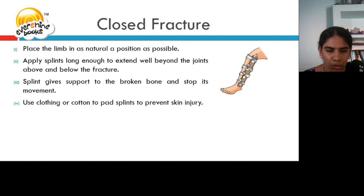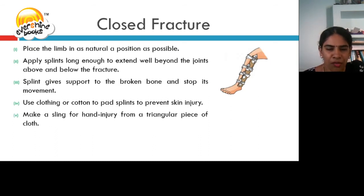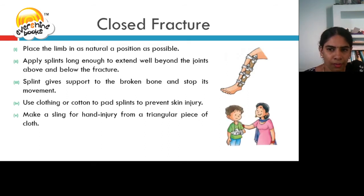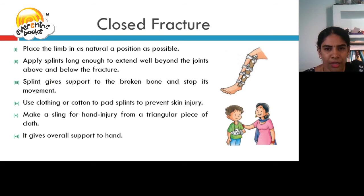Use clothing or cotton to pad splints to prevent skin injury. Make a sling for a hand injury from a triangular piece of cloth. It gives overall support to the hand. This can be done in case of hand injury or hand fracture.